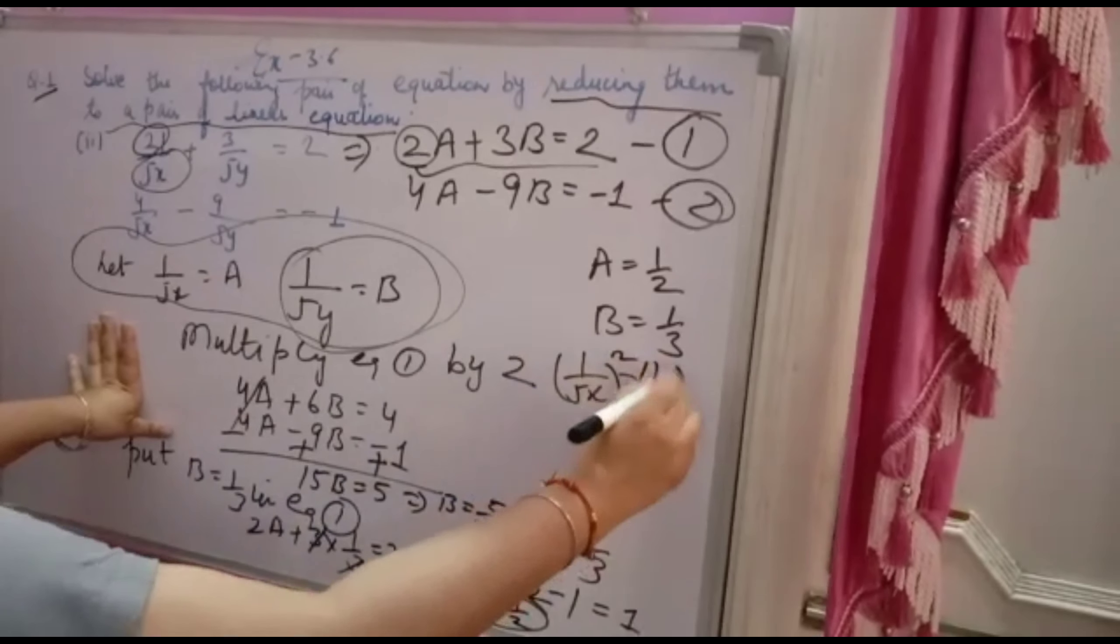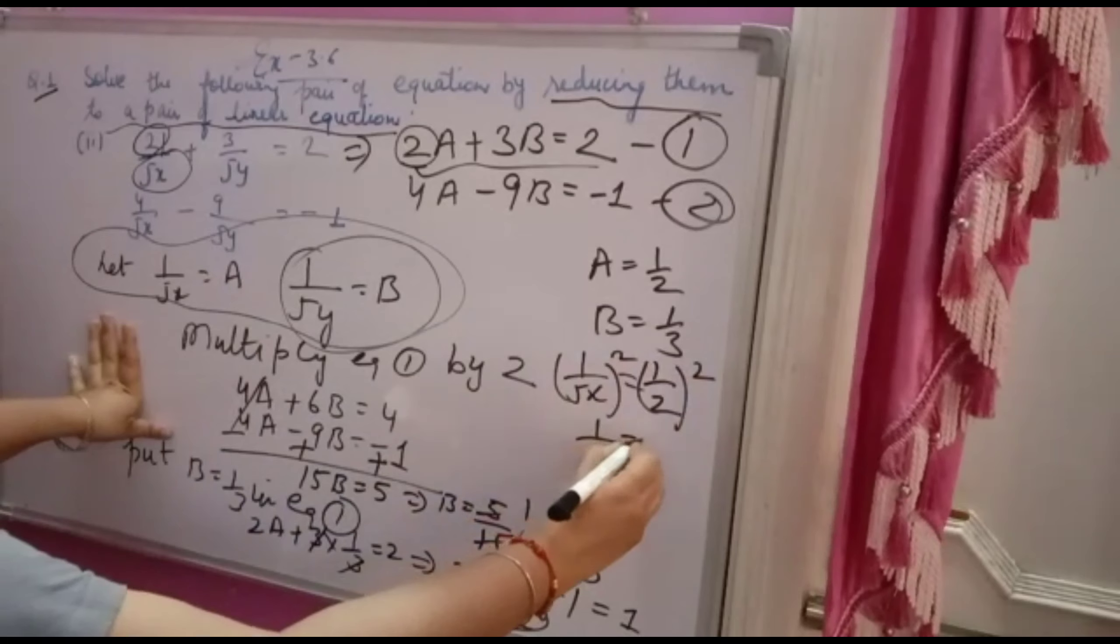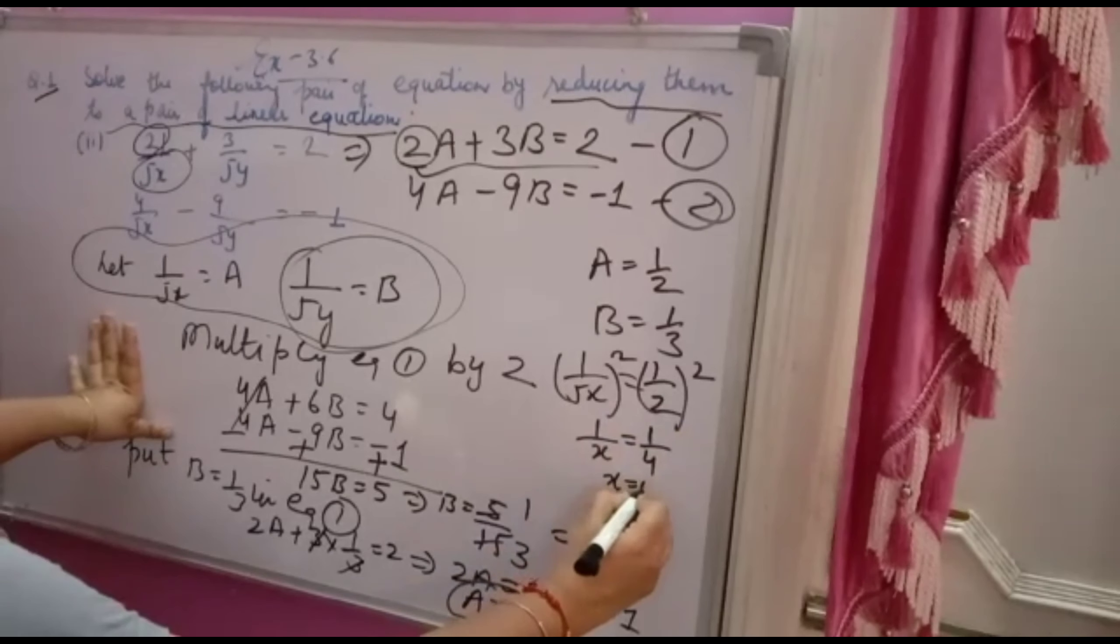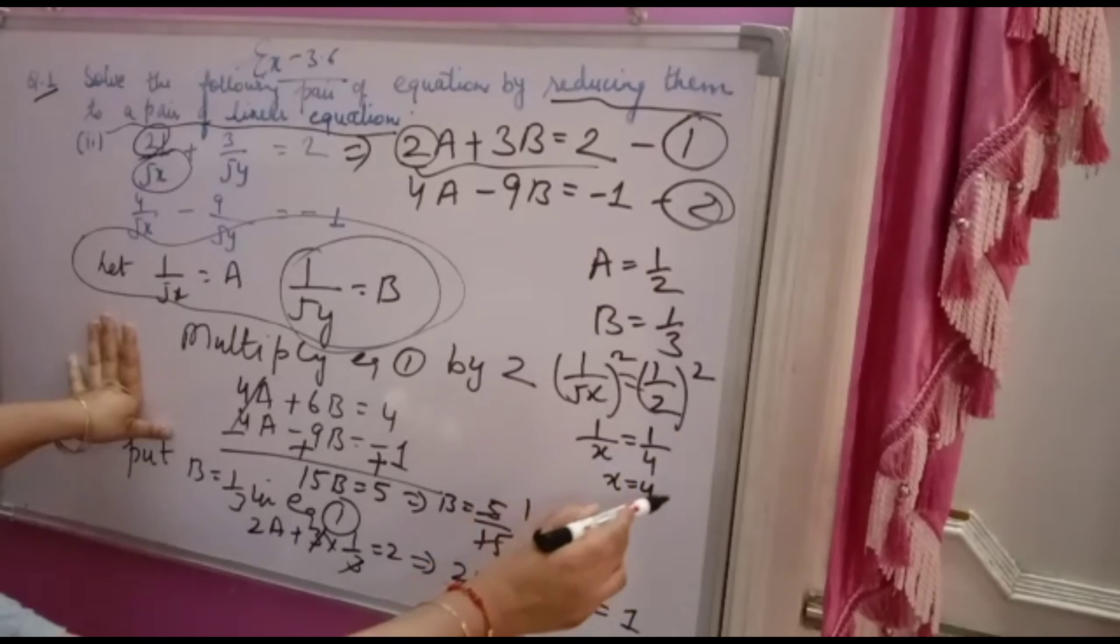Square both sides. Root x: 1 square is 1, root x square is x, is equal to 1 square is 1, 2 square is 4. So x will come equal to 4 because 1 over x is equal to 1 by 4, so x will be equal to 4.